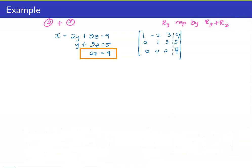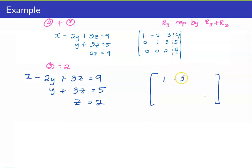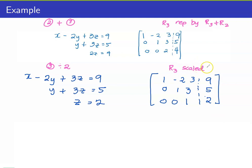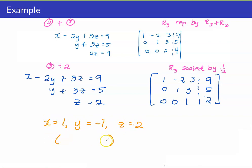This is what we wanted to achieve: 2z equals 4. To solve for z, divide equation 3 by 2. The corresponding augmented matrix is: 1, negative 2, 3, 9; 0, 1, 3, negative 4; 0, 0, 1, 2. What happened was R3 was scaled by one half — meaning it was multiplied by one half. Now that we have this, we can use back substitution to find the solution. Upon doing that, you will obtain x equals 1, y equals negative 1, and z equals 2, or in triple notation: (1, negative 1, 2).